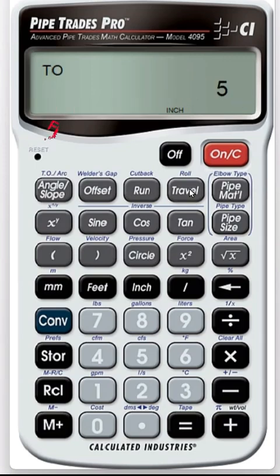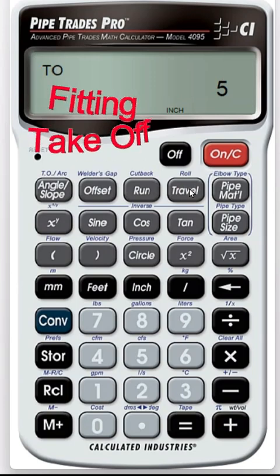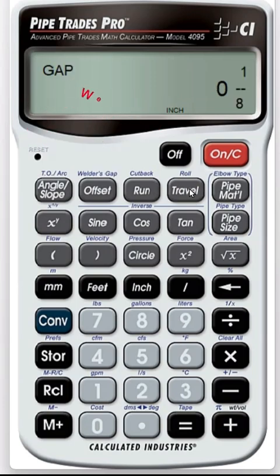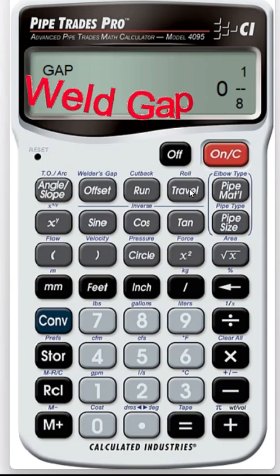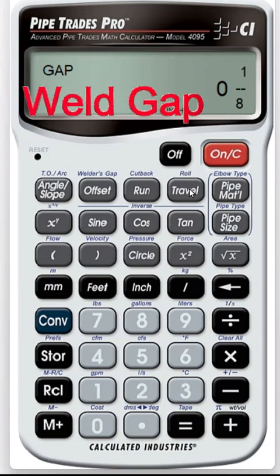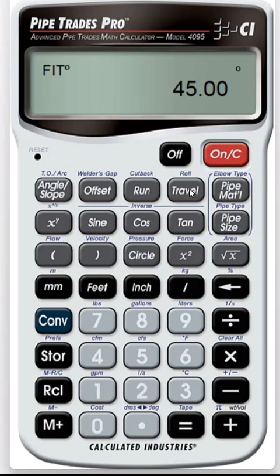Your fitting takeoff is 5 inches for your weld fittings. Your gap is confirmation of an eighth of an inch. That's your default setting from the factory. And your fitting is 45.